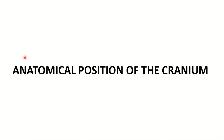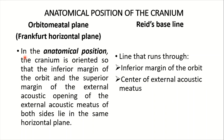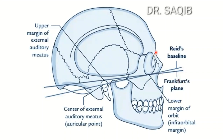The anatomical position of the cranium is defined by two reference planes. The Frankfurt horizontal plane — also called the orbitomeatal plane — passes through the inferior margin of the orbit and the superior margin of the external auditory meatus, lying in the same horizontal plane on both sides.